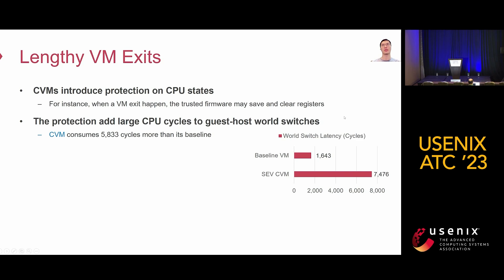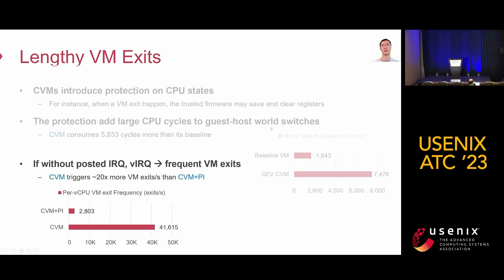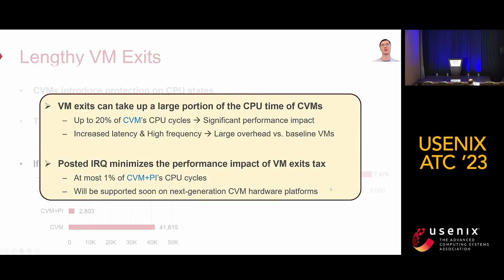We analyze each type of CVM IO tax one by one. First, the VM exit tax is introduced by CVM protection on CPU state. When a VM exit happens, the firmware may save and clear registers, which can add large CPU cycles to guest-host world switches. CVM consumes about 6,000 cycles more than the baseline. Without posted interrupt support, virtual interrupts can cause frequent VM exits. In our evaluation, the CVM can trigger about 20 times more VM exits per second than CVM plus PI. The takeaway is that VM exits can take up a large portion of the CPU time of CVMs.